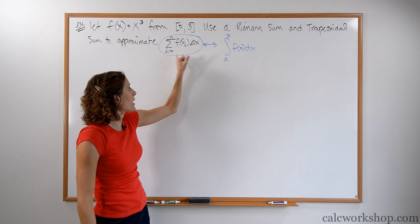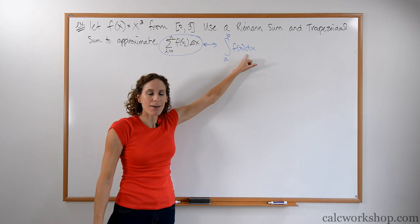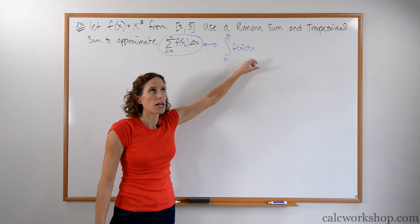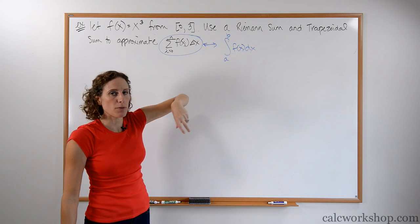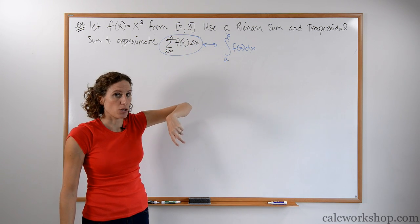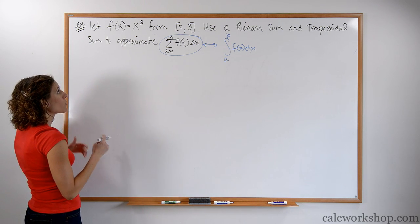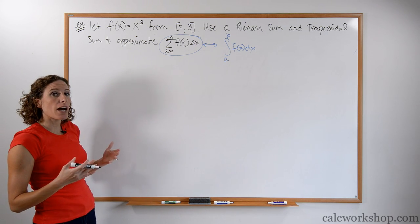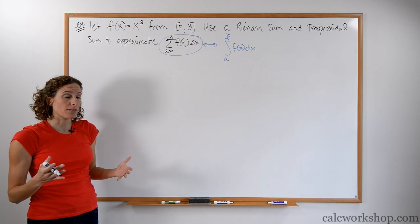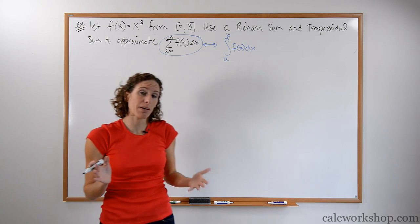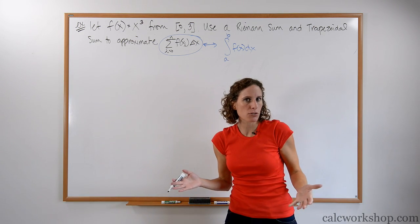We know a to b is our starting and our stopping value. f of x dx means I'm calculating area. So we know we're going to go from 0 to 3 for a Riemann sum and a trapezoidal approximation. Step number one is to figure out how we can cut it up — we can divide these up all different ways.